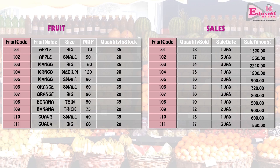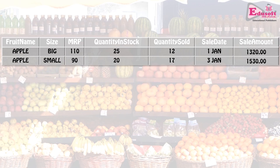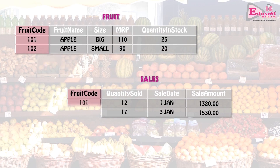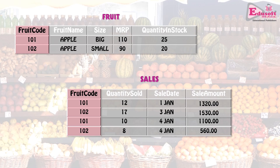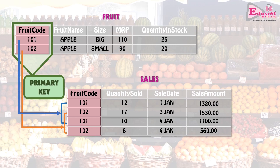Coming back to our example: we now have a fruit table and a sales table. A sale of 10 kg on 4th Jan and another of 8 kg on 4th Jan are entered. In the sales table, only the fruit code is entered; all other details are available in the fruit table. This way, tables are logically related, and this relation can be used to track details across both tables. In the fruit table, each fruit code appears only once — every fruit code is unique, identifying each record uniquely.